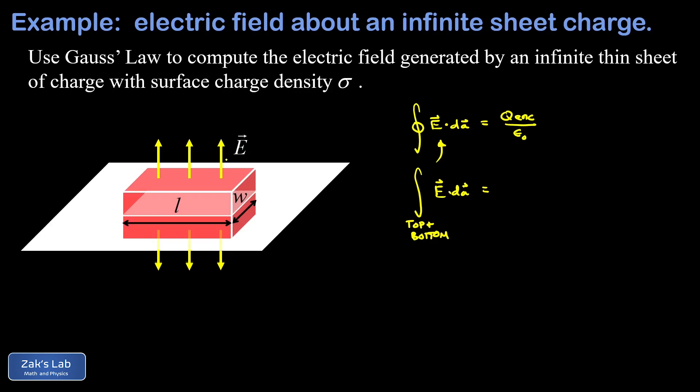Which means parallel to the normal vector, the direction of dA is the direction of the normal vector at each point. So the dot product just turns into the product of the magnitudes.